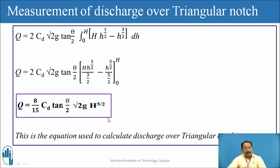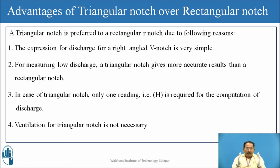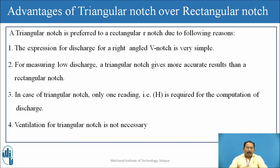This is the equation used to calculate the discharge over the triangular notch — keep it in mind. Some advantages of triangular notch over rectangular notch: the expression is simple, and for measuring low discharge, even with a small head, you get a comparatively good head in the triangular notch. Only one reading is sufficient for computation of discharge, and ventilation of the triangular notch is not necessary.